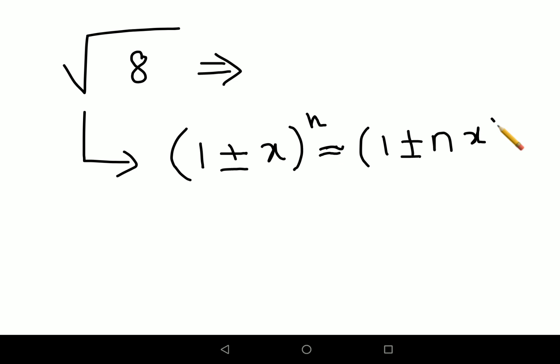Before beginning, I'll start with a smaller example. Let's say we are trying to find the square root of 8. Here's what you have to do: any imperfect square you have to represent it in the form of (1 ± x) raised to n, and then that can be almost equal to 1 ± n·x. This is the only thing which you need to remember.